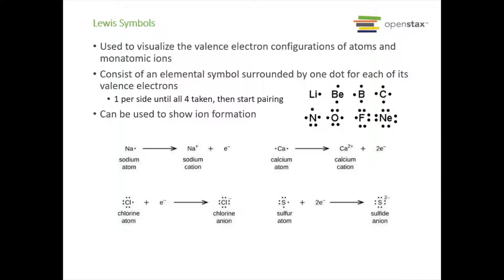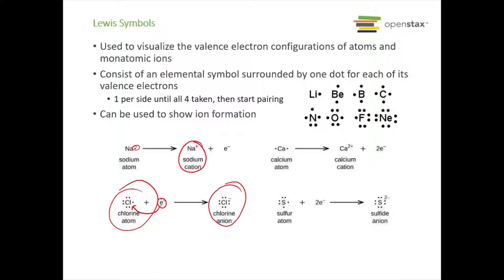We can also show ion formation. Sodium starts with one lone valence electron but loses it to form the sodium cation, which has no valence electrons in the outer shell. Calcium loses two electrons. We can also show gaining of electrons: chlorine gains one electron to fill its valence shell and form the chloride anion, and sulfur is shown gaining two electrons.